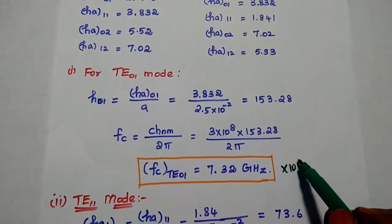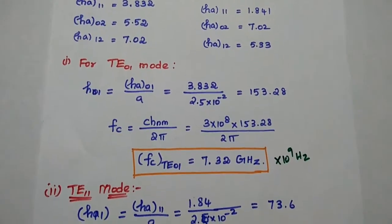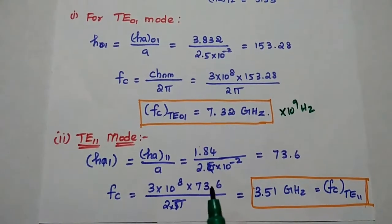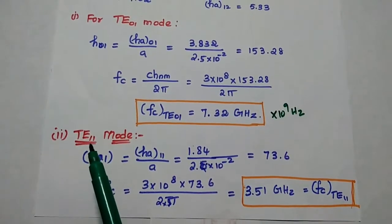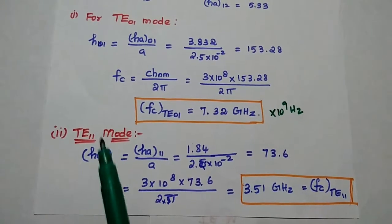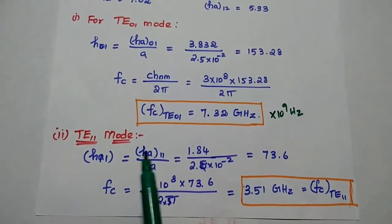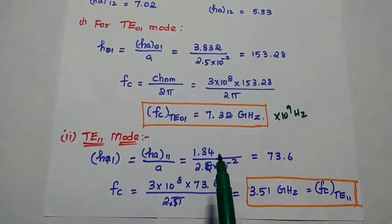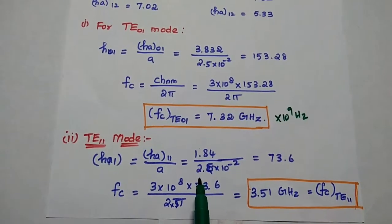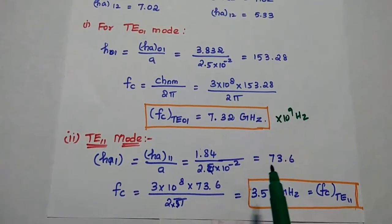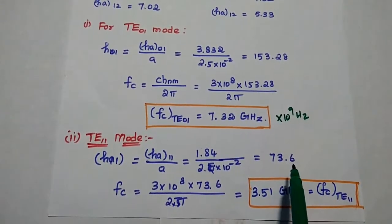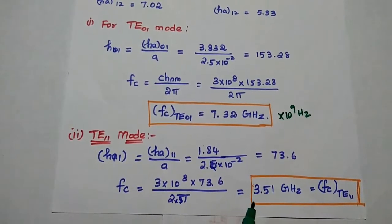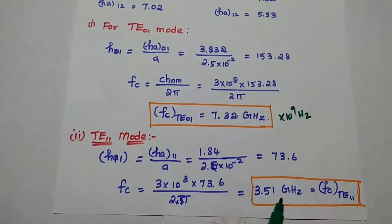Gigahertz means 10 to the power 9 hertz. Similarly, we can find out the value for TE11 mode. H11 = H'_11 / A = 1.84 / (2.5 × 10⁻²) = 73.6. Substituting this value in the cutoff frequency formula, the answer is 3.51 GHz for TE11 wave.